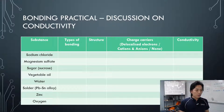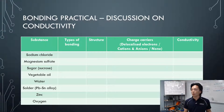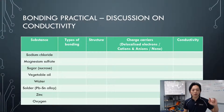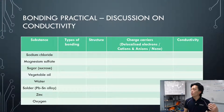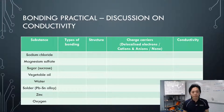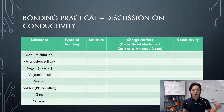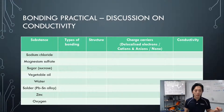Now we know the types of bonding and structure. Let's talk about charge carriers for each substance. You might have delocalized electrons, cations, anions, or none. For the substance itself before being dissolved: sodium chloride — is there any charge carrier? No. None, because ions cannot move freely in the solid.